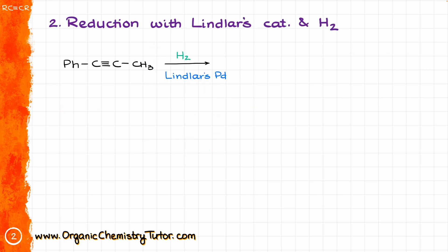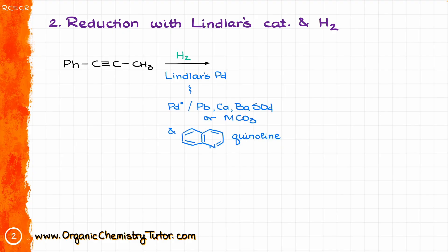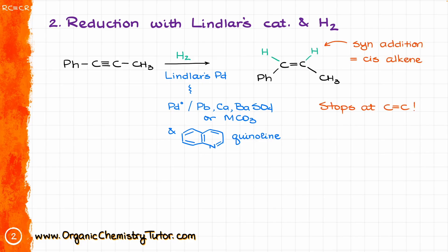Moving on, we have partial reduction with Lindlar's catalyst and hydrogen. Lindlar's catalyst is palladium that has been poisoned by heavy metals like lead, calcium, or barium in the form of a sulfate or carbonate — often calcium carbonate with palladium plated on top, plus quinoline as an organic poison. The key feature is that this reaction gives syn addition, the product is a cis alkene, and it stops at the formation of the double bond, so other double bonds in your molecule are perfectly safe.